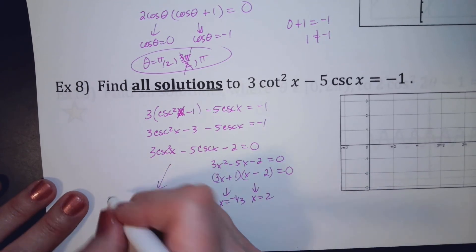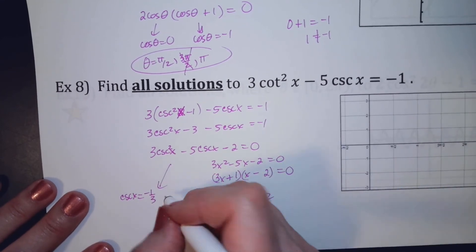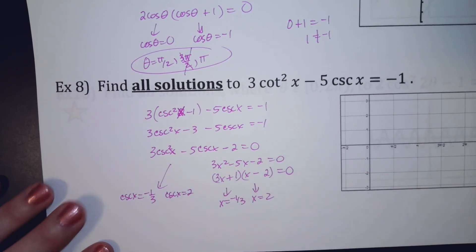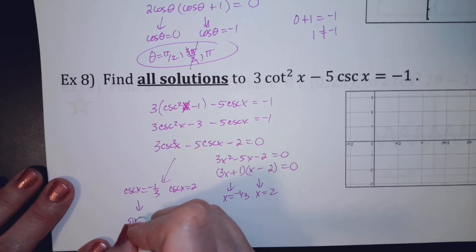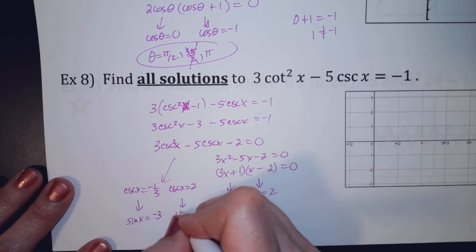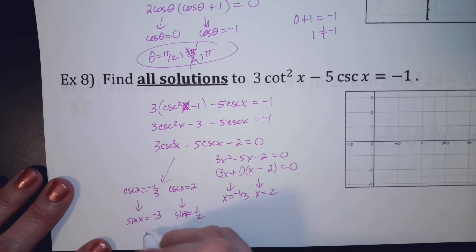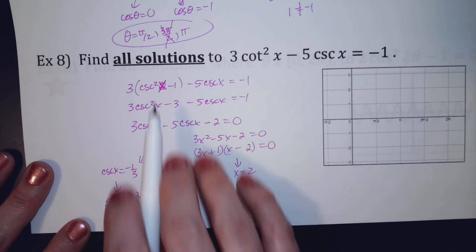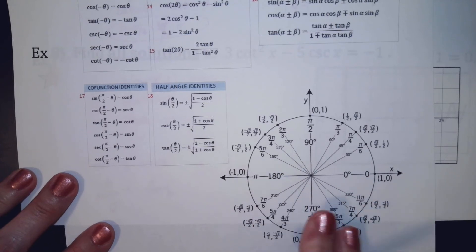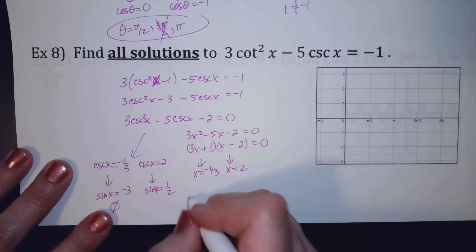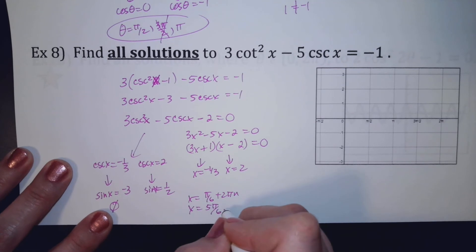Your x's stand for cosecants, so cosecant equals negative 1/3 and cosecant equals 2. Flipping to sine: sine equals negative 3 (from the first), and sine equals 1/2 (from the second). Sine can't be negative 3, so that's no solution. But sine can be 1/2. For all solutions, when is sine 1/2? At pi over 6 and 5pi over 6. So the answer is pi over 6 plus 2pi·n and 5pi over 6 plus 2pi·n.